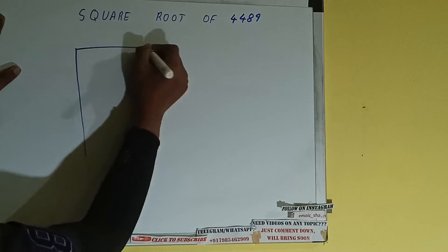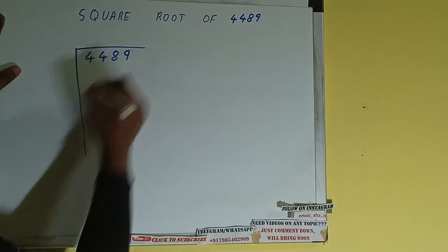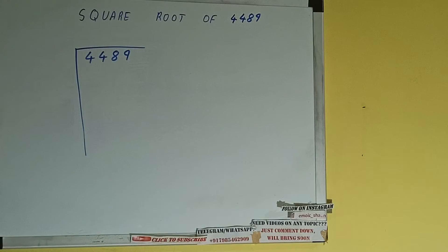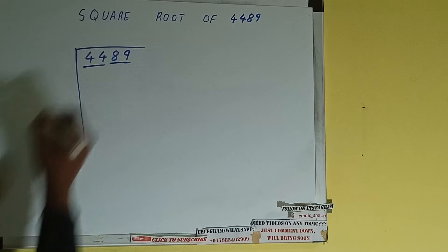So first of all we need to write the number like this: 4489. Next thing we need to do is we need to form pairs from the right hand side. So one pair will be this and one pair will be this.